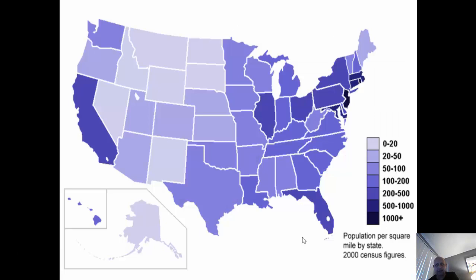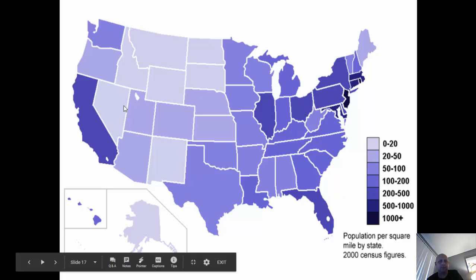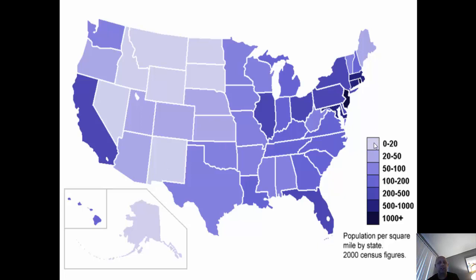Here's population per square mile by state. Some states like California, Illinois, and Ohio are dark blue, indicating over 1,000 people per square mile. All the way to the lightest blue states with only 0 to 20 people per square mile — nobody's there.